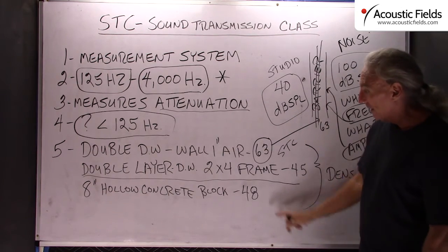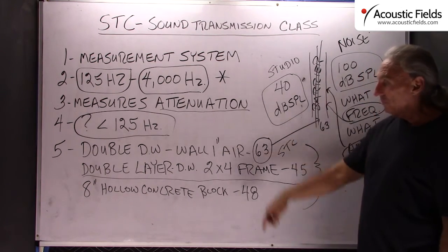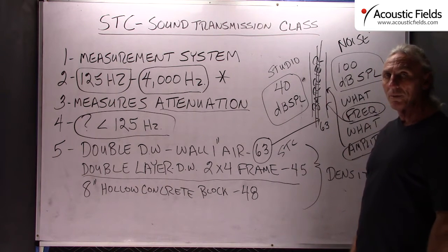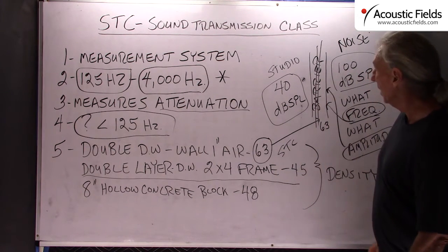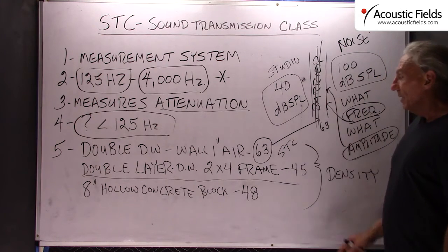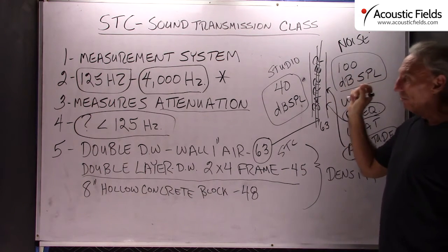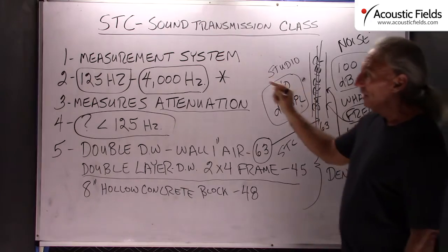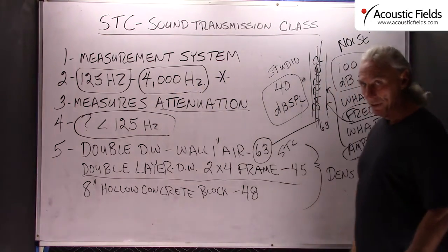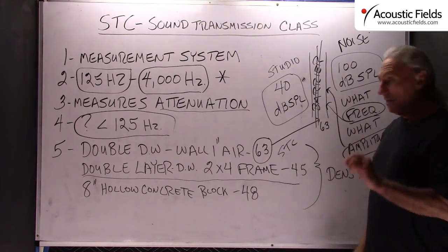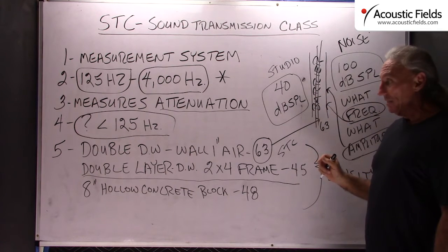Don't forget that. Hollow concrete block comes in at 48 STC, and we can list numerous others — we'll post some of those on our Facebook page so you can get a feel for it. But STC — Sound Transmission Class — is a rating and measurement system for frequencies from 125 to 4000. If that's your noise issue, great. But in most cases, it's not.